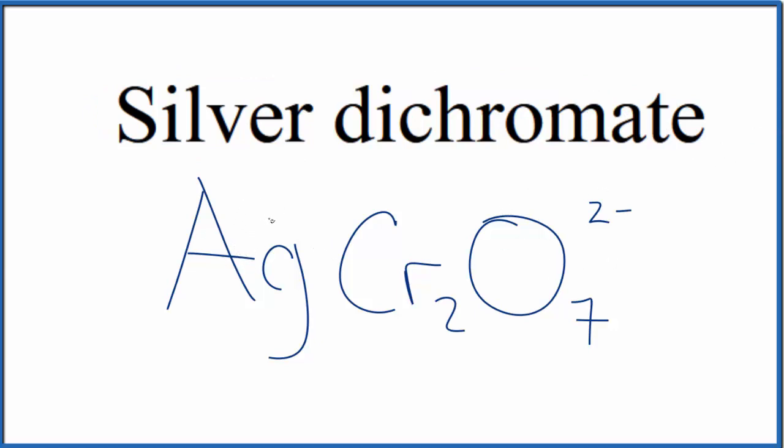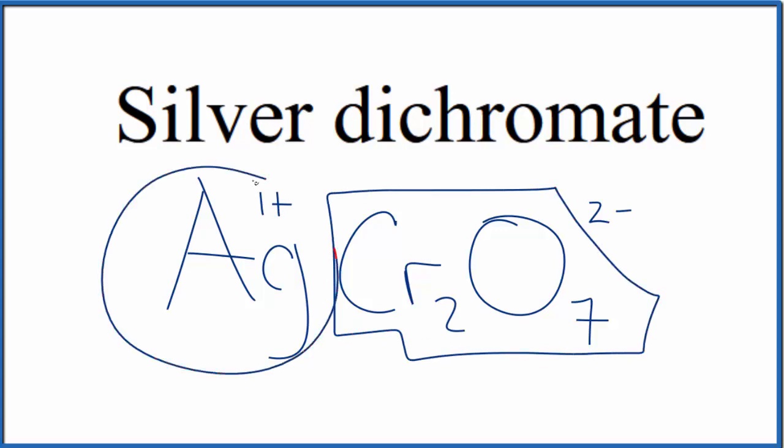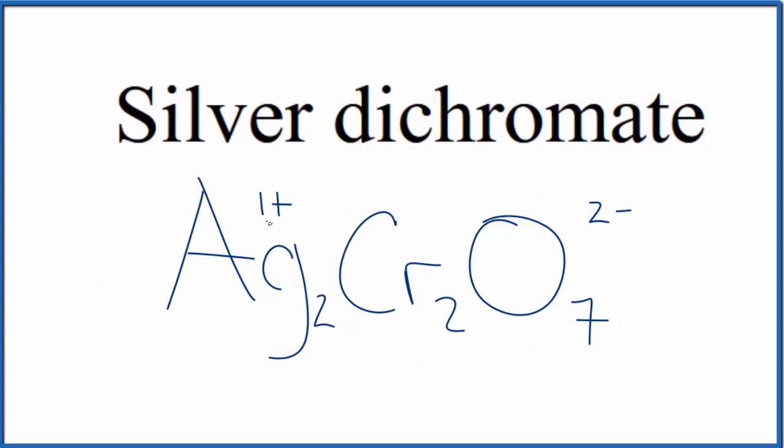Silver, even though it's a transition metal, is almost always 1+. And then this whole dichromate ion here is 2-. So if we had two of these silver ions, put a subscript of 2 right here. 2 times 1+ equals 2+, which would balance out the 2-.